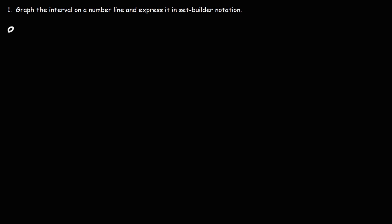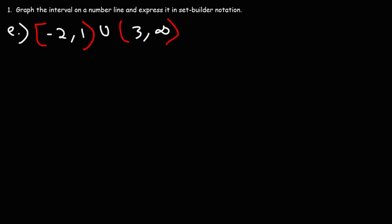Now let's try a harder example. Let's say we have the interval from negative 2 to 1, and then union — this is going to start from 3 and go to infinity. Go ahead and graph it on a number line, and then express it in set builder notation.